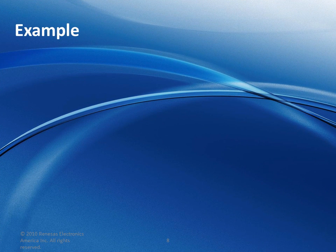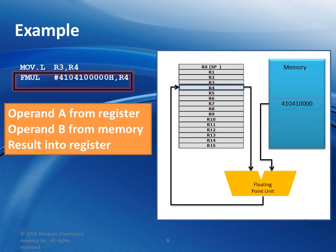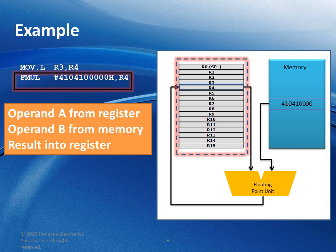Let me give you an example. In this example, we show a memory-to-register floating point operation made by using the instruction FMUL. The FPU takes one operand from a register and the other operand from memory. The result goes back into the general purpose register. This is just one example to showcase how the floating point unit takes advantage of the RX addressing mode.